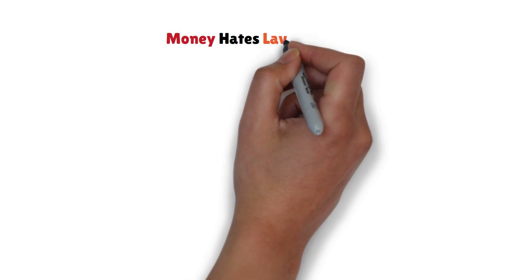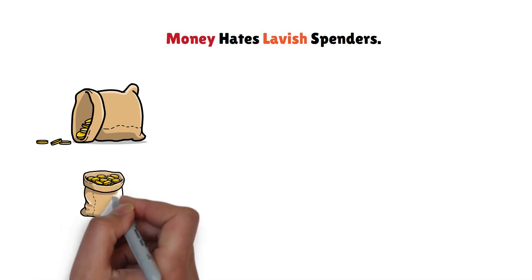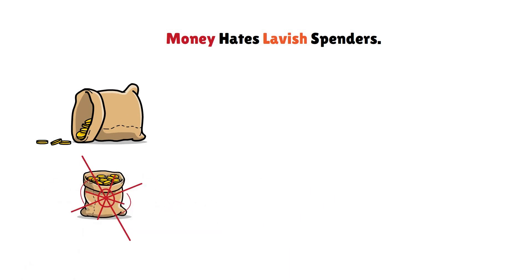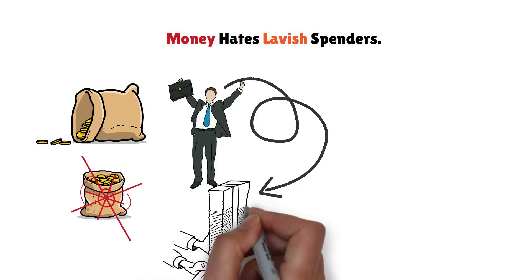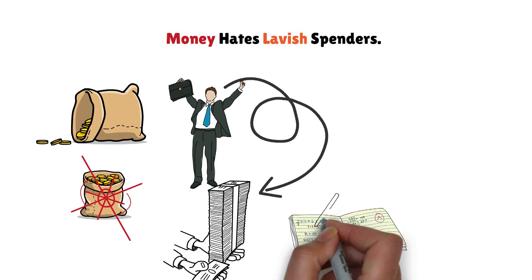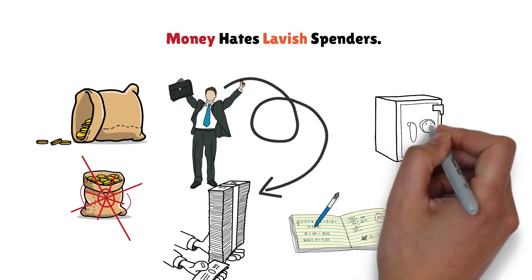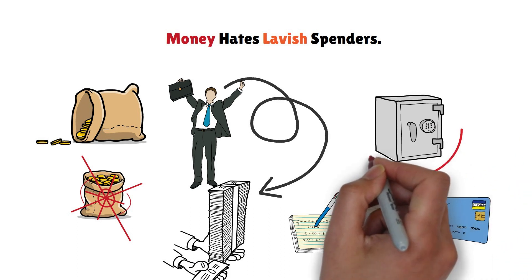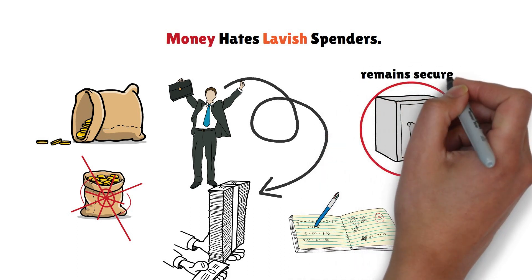Rule 4: Money hates lavish spenders. Similar to a jar that's never refilled, money depletes when constantly spent without replenishment. Successful people have strategies in place to replace the money they spend, emphasizing the importance of saving and managing expenses. It's not just about indulging in luxuries, it's about having a reliable means to replenish your funds and ensuring that your financial well-being remains secure.